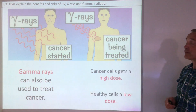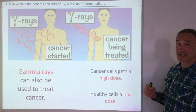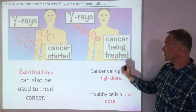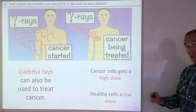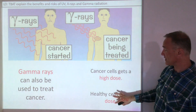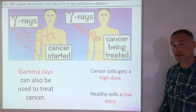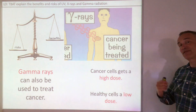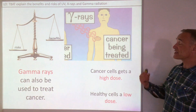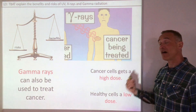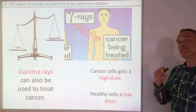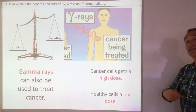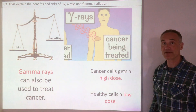Gamma rays can also be used to kill cancer cells — just like x-rays, directed just at the cancer so those cells can be killed, while the healthy cells are left with a low dose. Do the benefits outweigh the risks? Yes — because if you have cancer, the risk of it not being treated is far higher than the very minimal risk of some healthy cells around developing cancer due to ionisation.